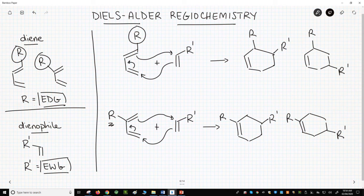These products have names based on the relative position of the two R-groups on the ring. On the top line, we call this the 1-2 product. And this, where the groups are 1-3, we call that the 1-3 product.